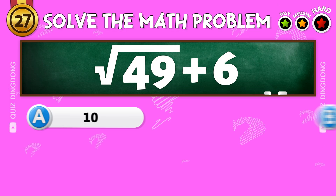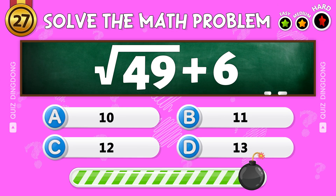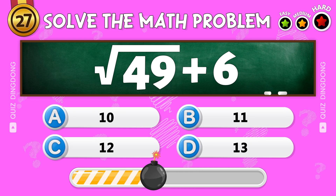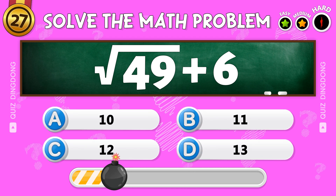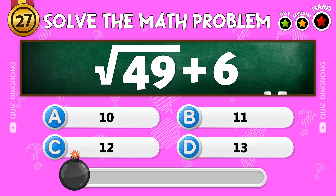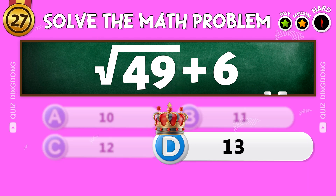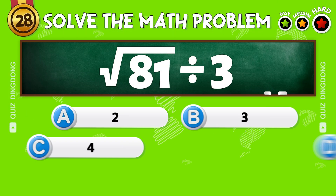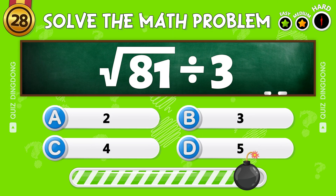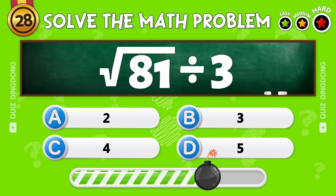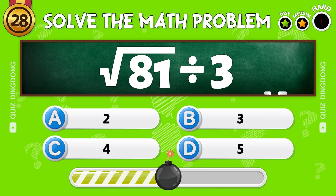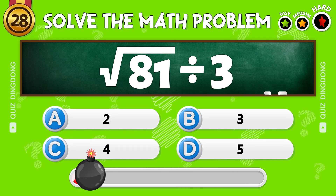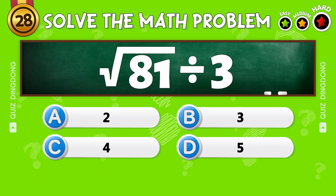What is the square root of 49 plus 6? Awesome. What is the square root of 81 divided by 3? Exactly, the answer is 3.